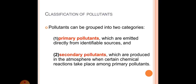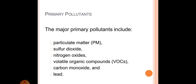Here comes the classification of pollutants. Pollutants can be grouped into two categories: primary and secondary pollutants. So first we will talk about the primary pollutants which are emitted directly from identifiable source and secondary pollutants.